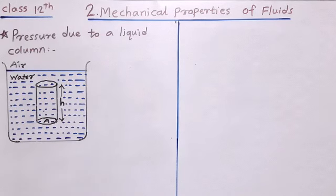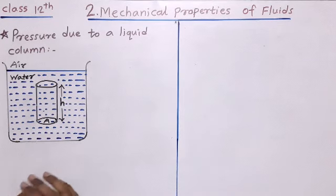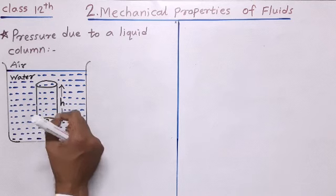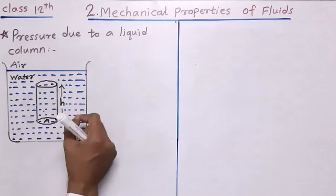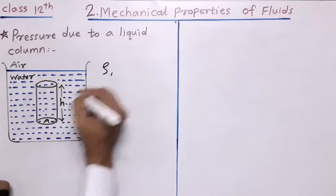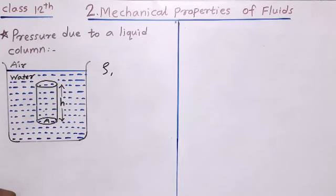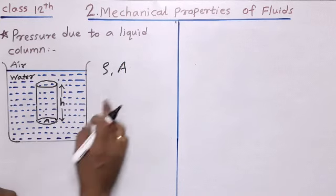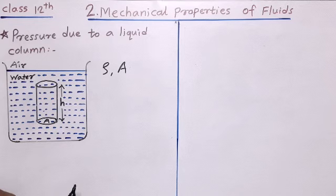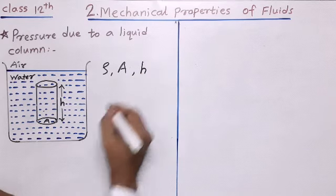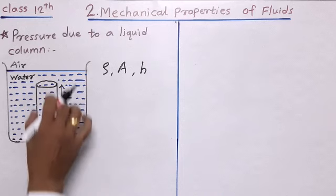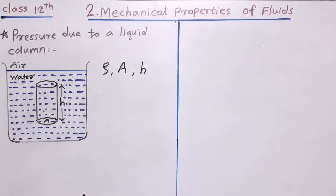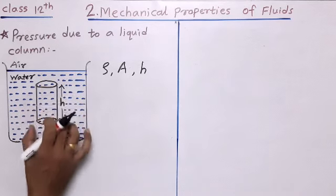The height of the cylinder, or depth of the liquid column, is h. While writing the answer, first you have to write: consider a liquid filled inside the container, and the density of this liquid is rho (ρ). The area of cross-section of the cylinder inside the liquid is A, and h is the height of the liquid column or cylinder.